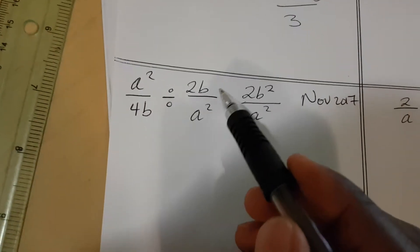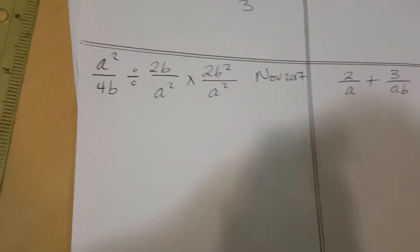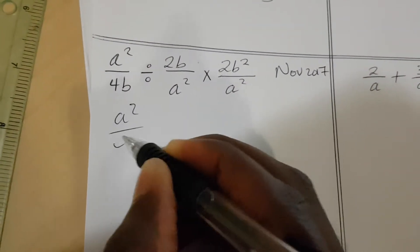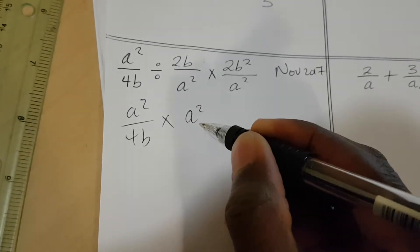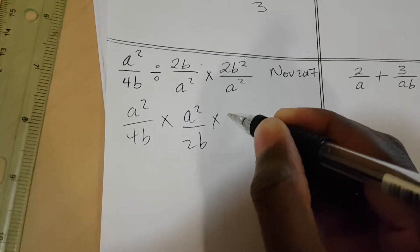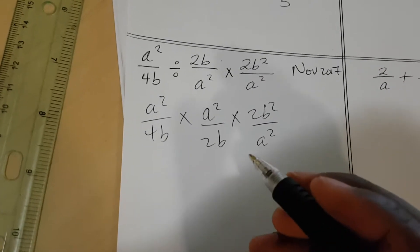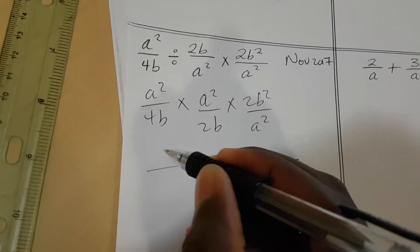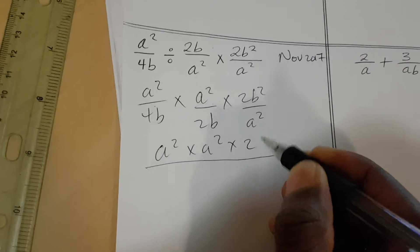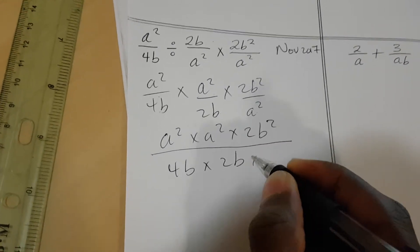This one is from November 2017. First thing, we convert the division to multiplication. The first fraction remains the same, then we swap the divisor so it becomes a² over 4B, multiplied by 2B² over a². With multiplication of fractions, you multiply numerator by numerator by numerator, and denominator by denominator: 4B × 2B × a².